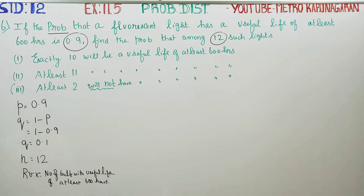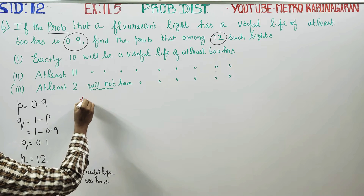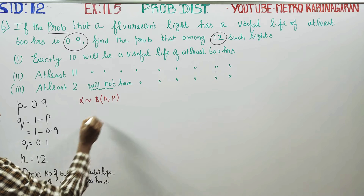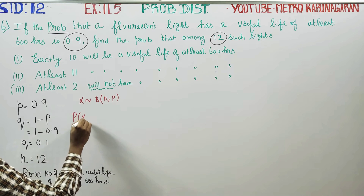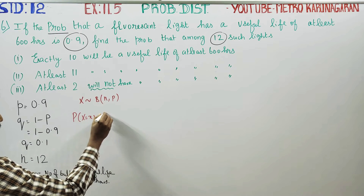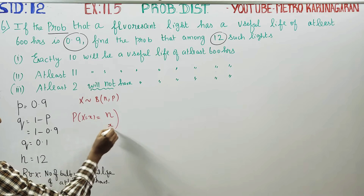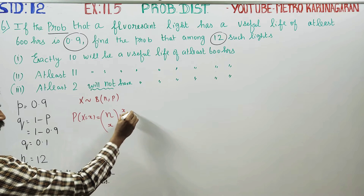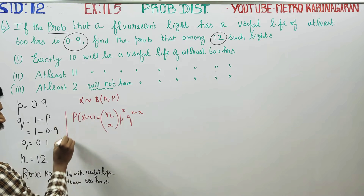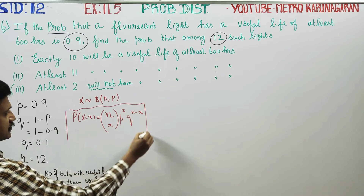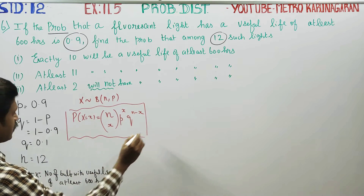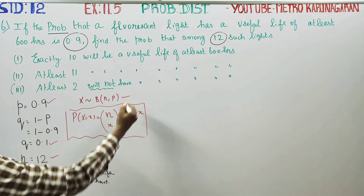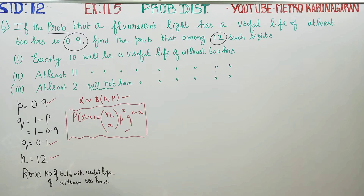X follows binomial distribution with parameters n and p. The binomial formula is: P(X = x) = nCx × p^x × q^(n−x). This is the main formula. Knowing p, q, and n, we can apply the binomial distribution formula.